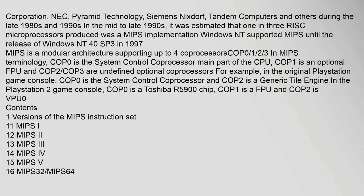Windows NT supported MIPS until the release of Windows NT 4.0 SP3 in 1997. MIPS is a modular architecture supporting up to four coprocessors: COP0 (the system control coprocessor, main part of the CPU), COP1 as an optional FPU, and COP2 and COP3 as undefined optional coprocessors. For example, in the original PlayStation, COP2 served as a generic tile engine; in the PlayStation 2, COP1 was the FPU and COP2 was VPU0.